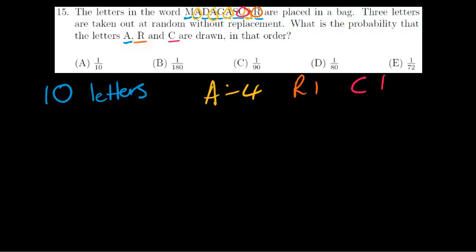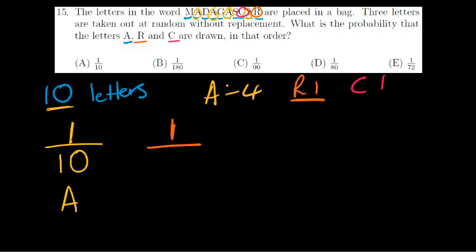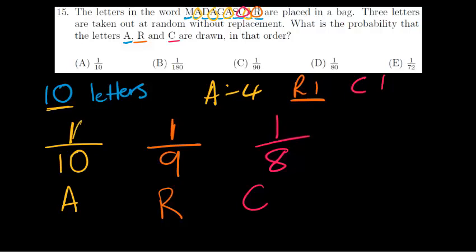In order for me to get the letter A, I have to draw one tile out of all 10 that exist. So the chances of getting the letter A is 4 out of 10. The chances of getting R is 1 out of 9, because I've taken the A out, so it's no longer 10. The chances of getting the letter C is 1 out of 8 because we've taken two tiles out. We are going to multiply them — not add them. Let's simplify 4 over 10 into 2 fifths.